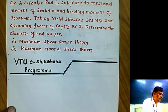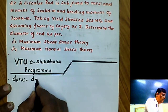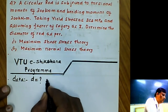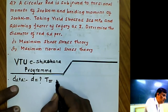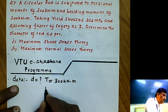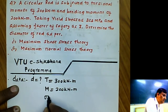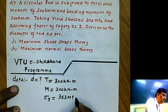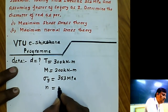First, let us write the data given. The diameter is to be found out. Torsional moment is 300 kNm, bending moment is 200 kNm, yield stress is 353 MPa, and the factor of safety is 3.